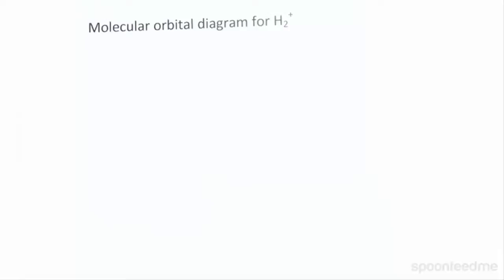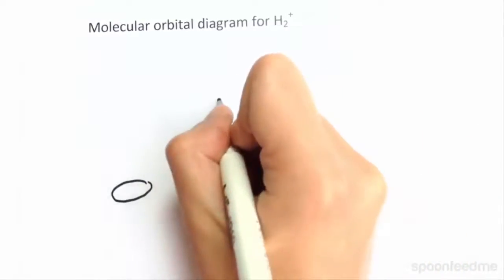So the molecular orbital diagram looks like this. We draw two single atomic orbitals to either side, and along the middle we have our molecular orbitals. The bonding molecular orbital will be lower, down here, as it's of lower energy. And the antibonding molecular orbital, higher, as it's of higher energy.